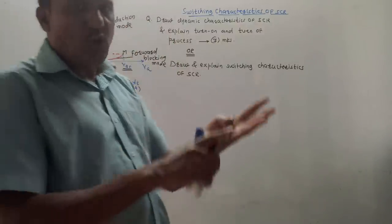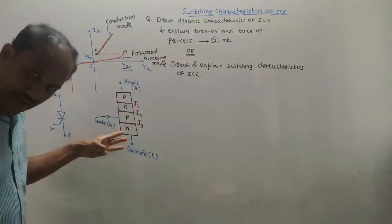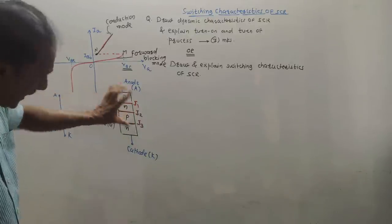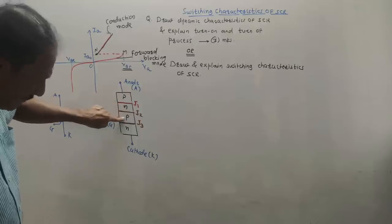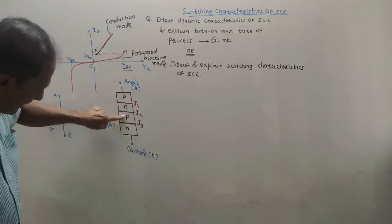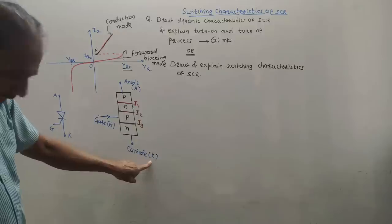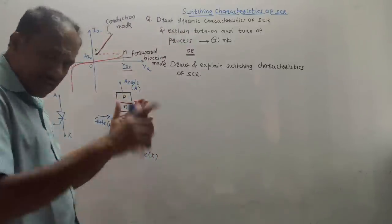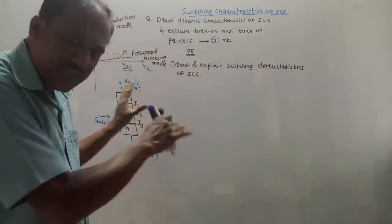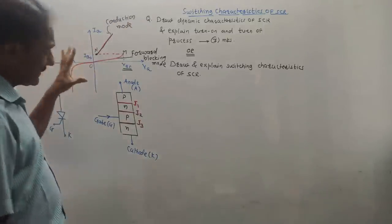Let me brush up what we have studied earlier. SCR is a Silicon Controlled Rectifier. It has four layers: P-N-P-N, and accordingly there are three junctions J1, J2, J3 as shown in the diagram. Junction J1 is because of the PN region, J2 is due to the NP region, and J3 is between the P and N region. There are three terminals: anode (A), cathode (K), and gate terminal.